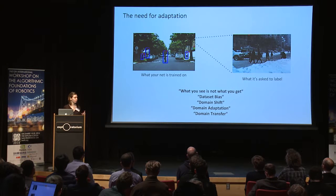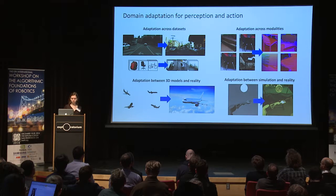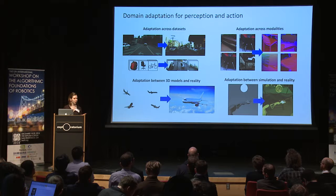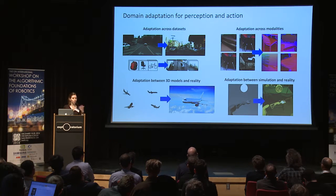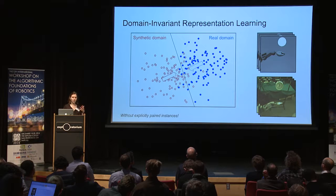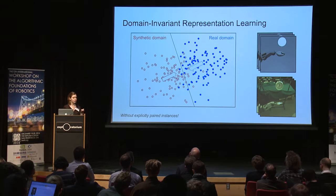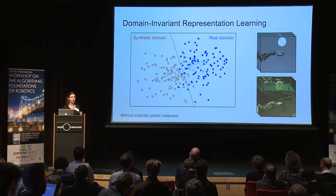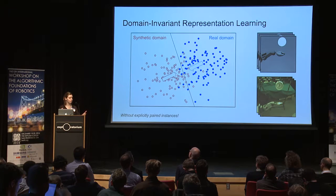We're going to call this domain adaptation. Domain adaptation can be applied to a couple of different problems, such as between datasets, between different modalities like RGB and depth data, or between synthetic renderings and real images. The main approach we'll discuss is learning a representation of your image that is invariant to which domain it came from, and specifically we're going to do this without hard paired examples between domains.